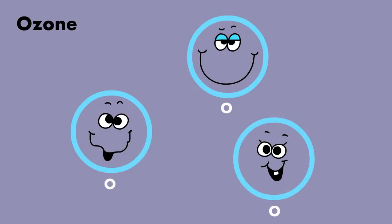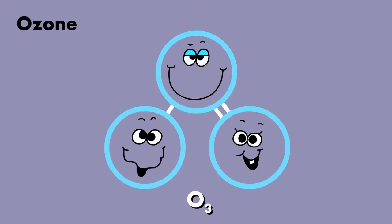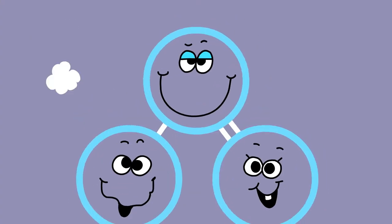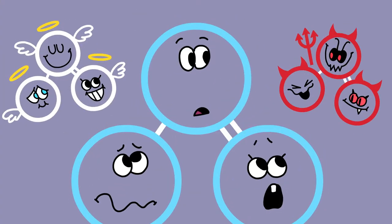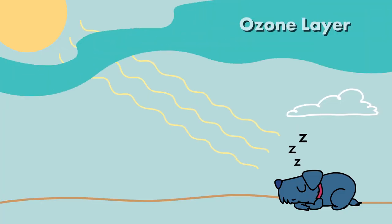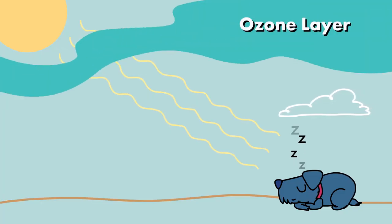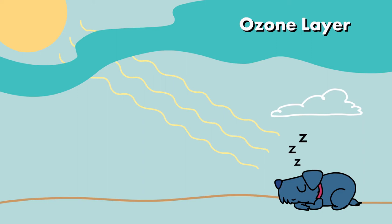Ozone is a gas composed of three atoms of oxygen. Ozone can be good or bad depending on location. Good ozone occurs naturally in the stratosphere, forming a protective layer against dangerous ultraviolet rays.